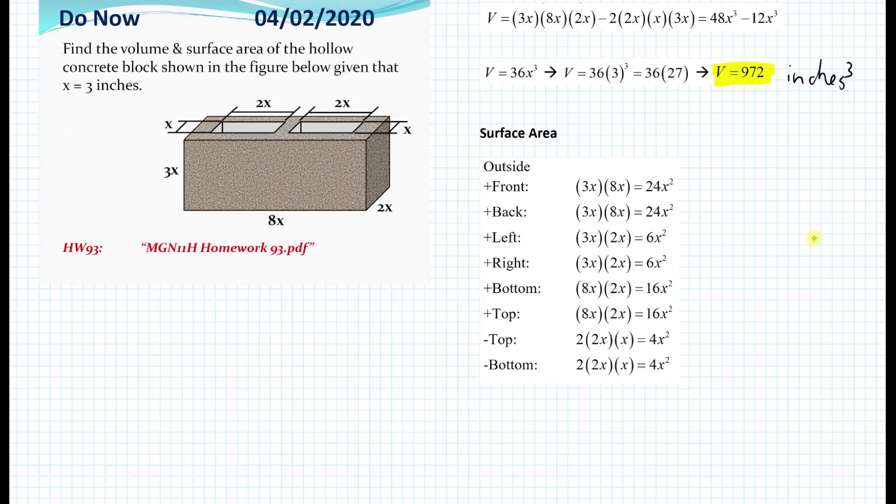Now we want to subtract the hollow part from the top and the bottom. So if you look closely for the top part over here, this is just x times 2x. And there are two of them, 1 and 2. So that's why we subtract all of this. And the same goes for the bottom. So we're going to subtract the same amount on the bottom. So this was the outside part.